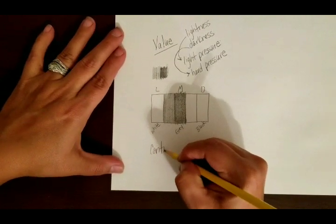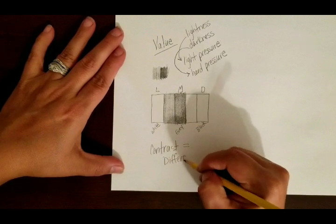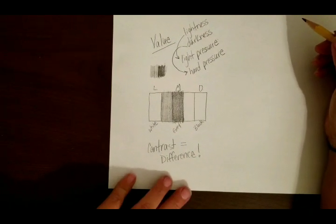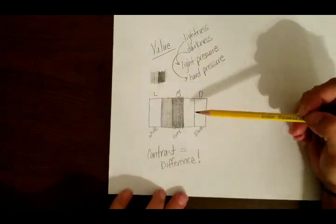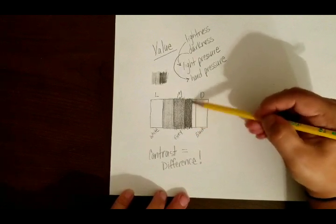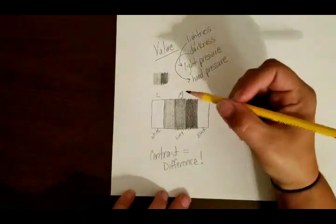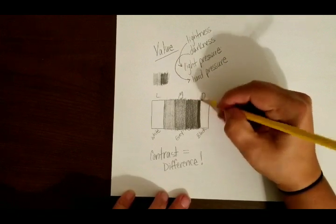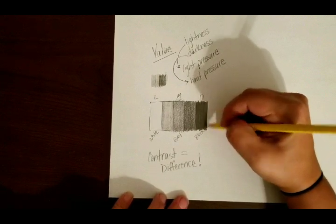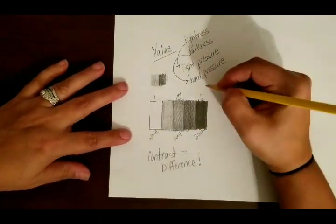When I moved into the next section — the gray — I moved my hand forward on my pencil. When we have different values next to each other, we call this contrast. Contrast is basically the term we use for difference, so whenever we have contrast we can see a difference in the values. It's not a smooth transition, it's kind of choppy — each different section is a different shade or value. Moving to the next section, I'm moving my hand forward on the pencil so my pressure gets harder and it's creating a darker value.